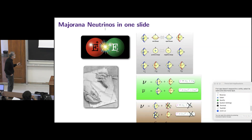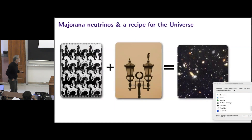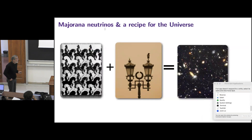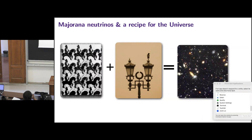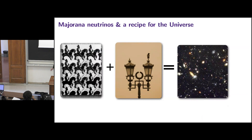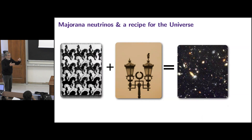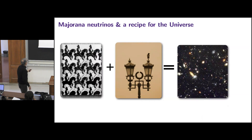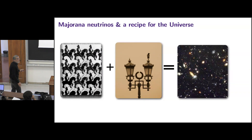We already know this from last week. This one slide is also my recipe to build the universe. You take Majorana neutrinos — notice the interesting thing, the knights of both colors that complement each other — and then you take CP violation, and then here you get the universe. Easy.